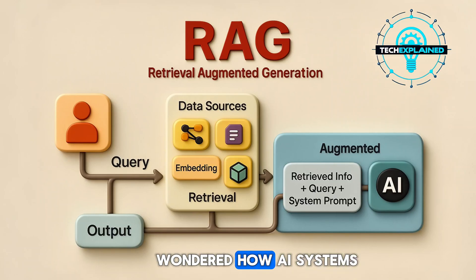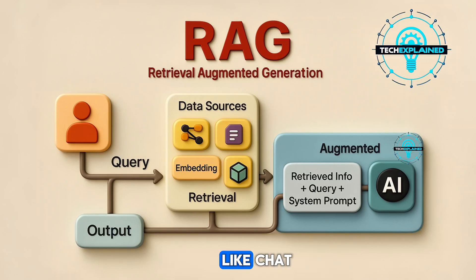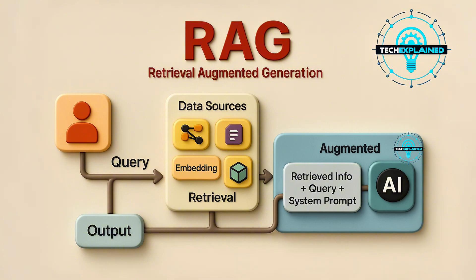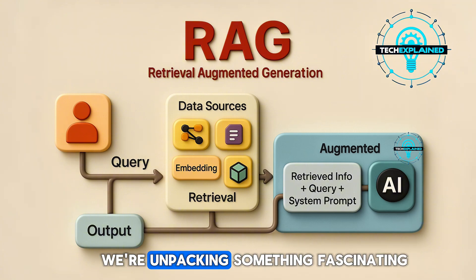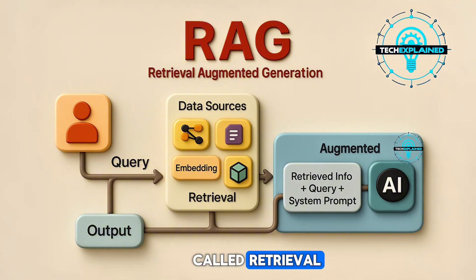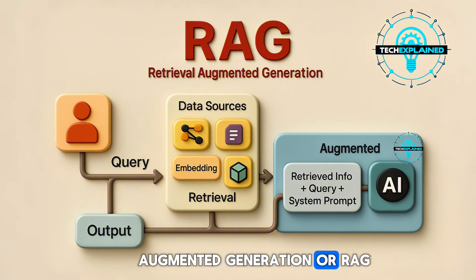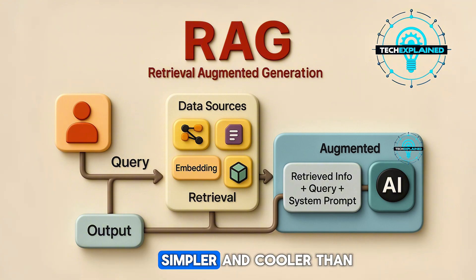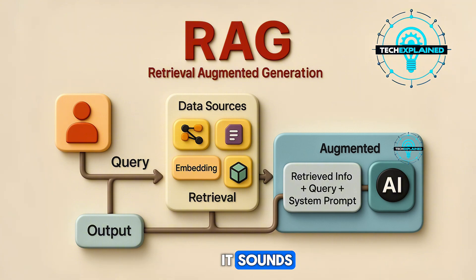Hey, have you ever wondered how AI systems like ChatGPT manage to give accurate, up-to-date answers so quickly? Well today we're unpacking something fascinating called Retrieval Augmented Generation, or RAG for short. Trust me, it's way simpler, and cooler, than it sounds.